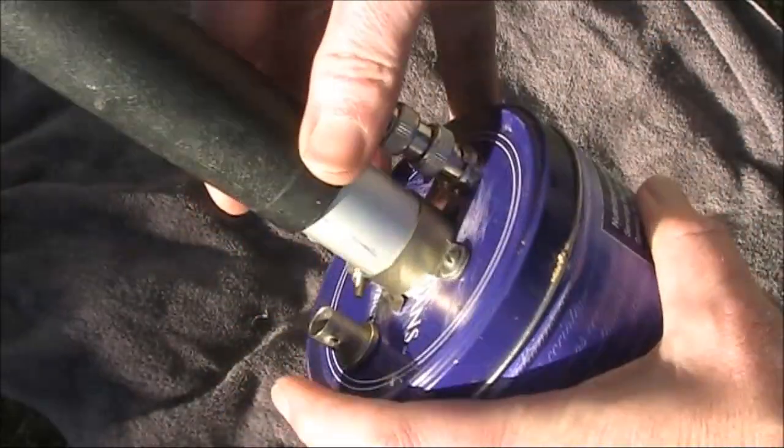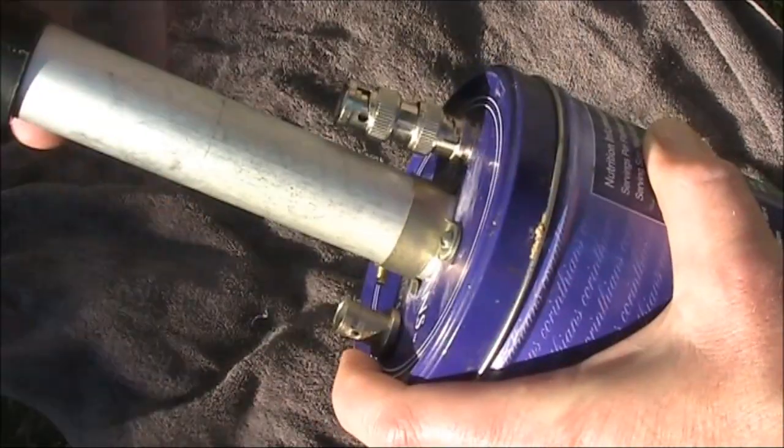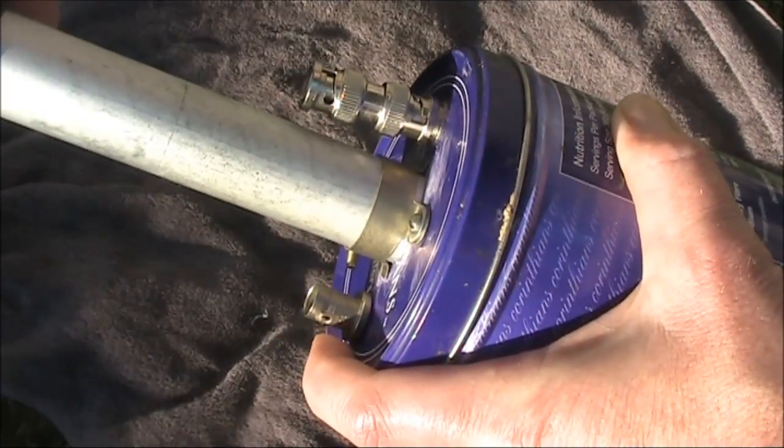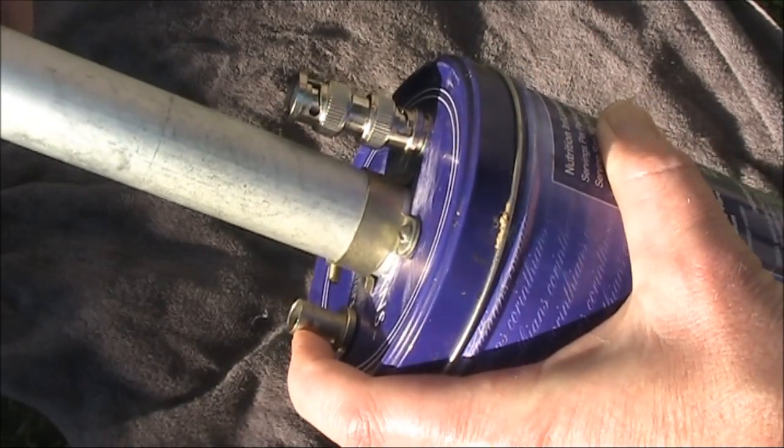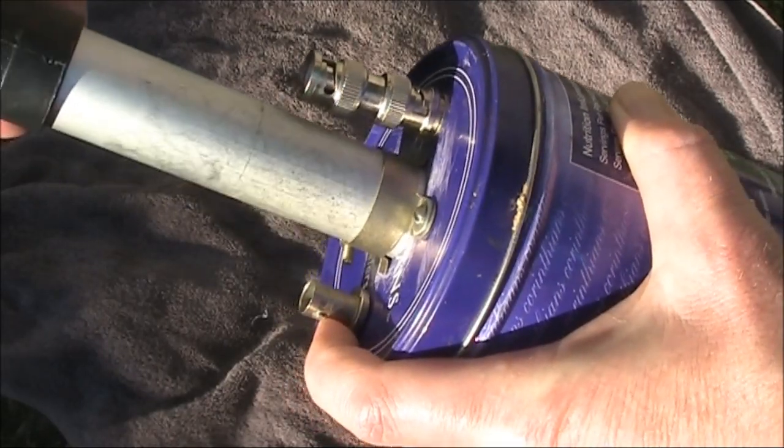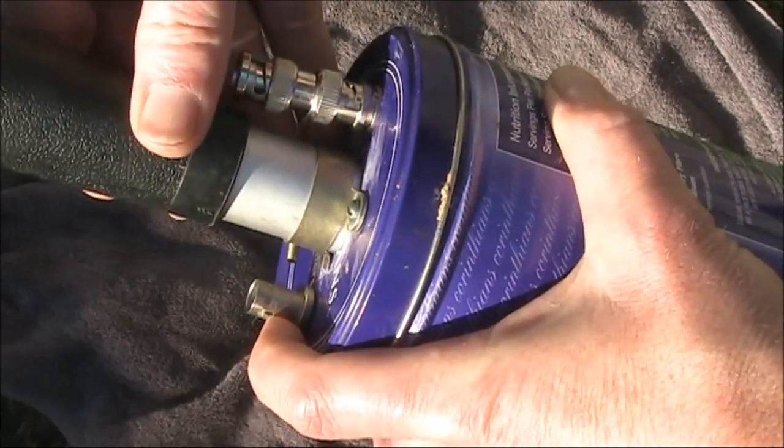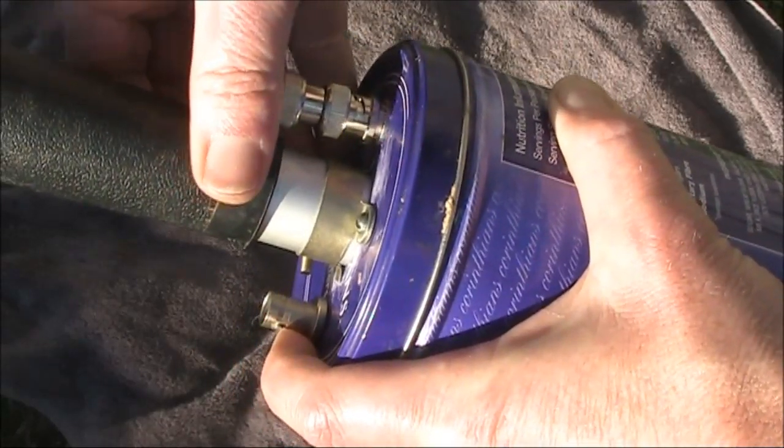The purpose of that is to vary the resonant frequency. With it pulled out, the resonant frequency is very high in the UHF range, though I don't have equipment to measure it. When it's almost all the way in, it's around 400 MHz.